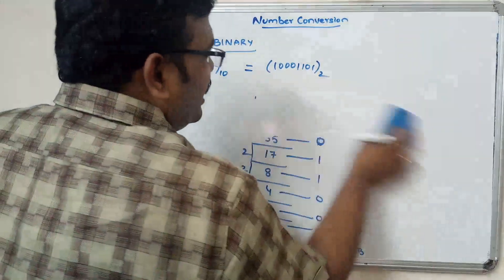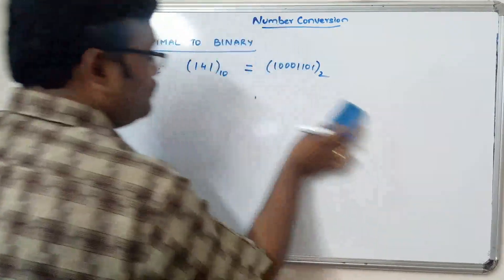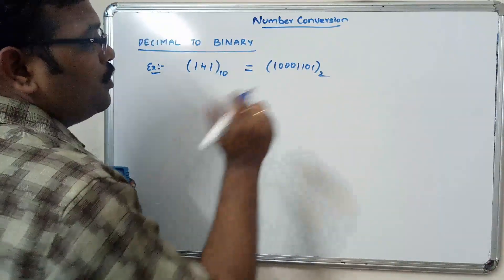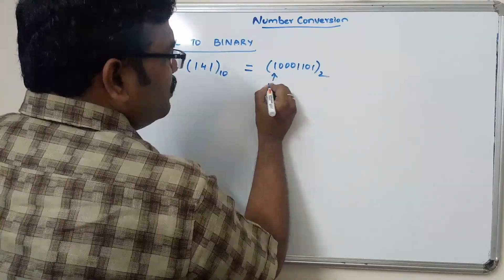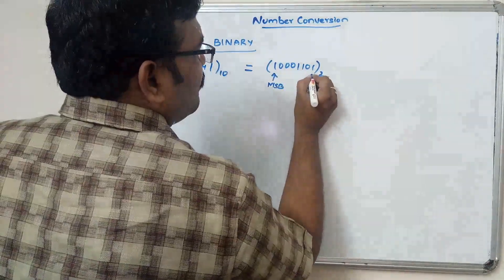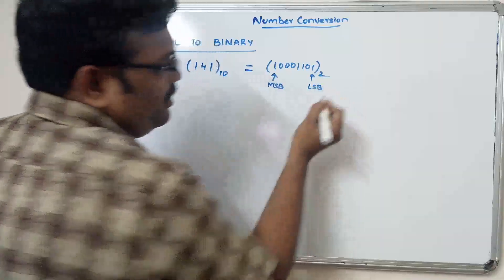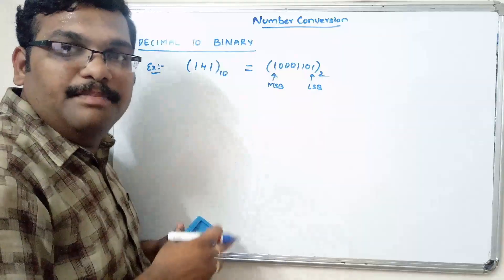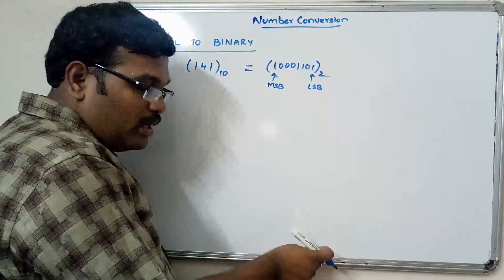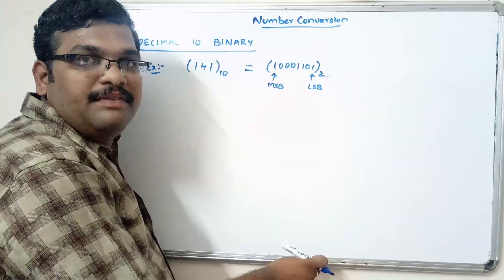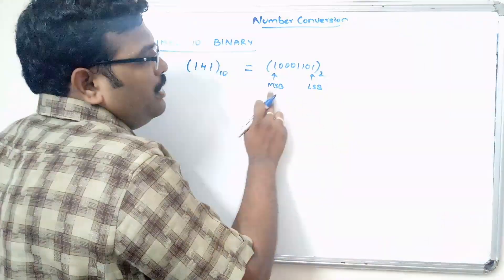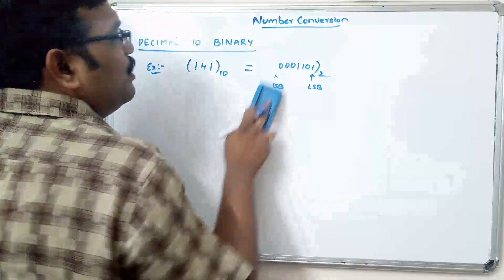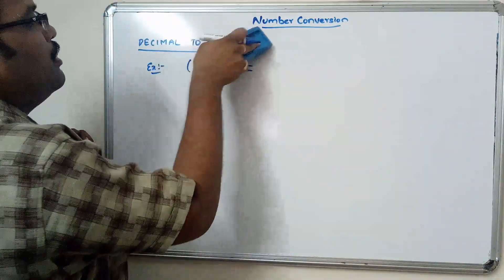Correction: the last remainder is the most significant bit and the first remainder is the least significant bit. Now let us convert the same decimal number 141 to octal.